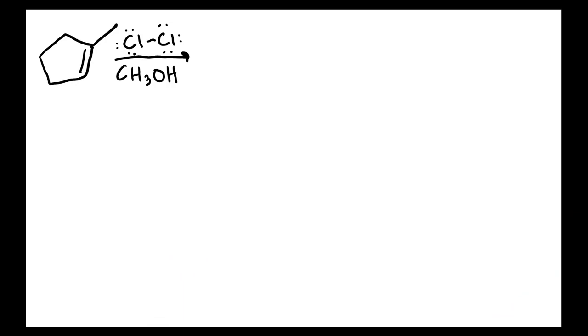Okay so what we're going to do here is we've got our double bond and we're going to confirm that this is actually halohydrin formation. So we've got the double bond, Cl2, and then we want to check to make sure we're using a protic solvent and we are, we're using methanol.